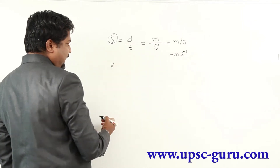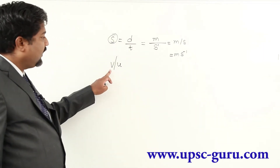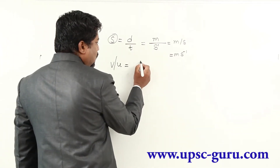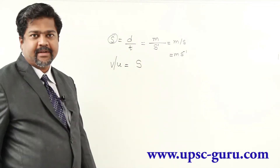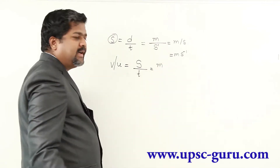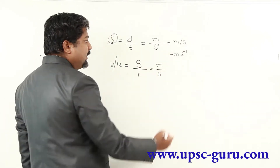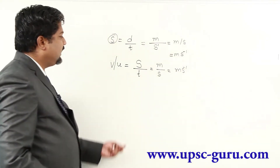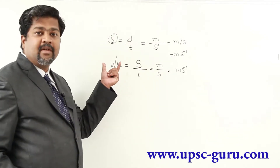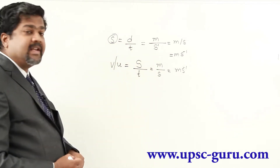If we replace speed by velocity, V is final velocity and U is initial velocity. Velocity equals displacement S upon time, so the unit is meter per second — the same as speed. The only difference is that velocity has a directional character, so we call it a vector, whereas speed has no directional character and is called a scalar. The units are the same for both.